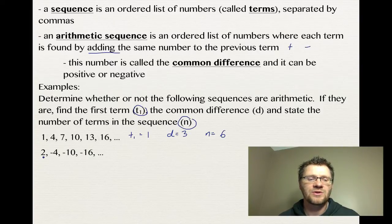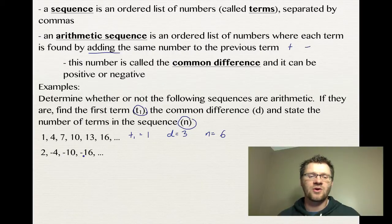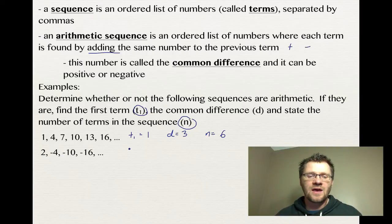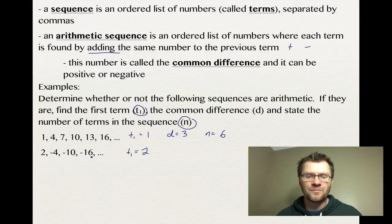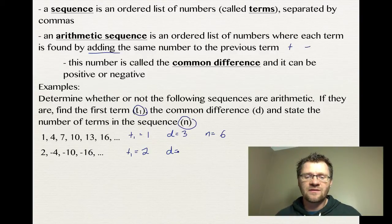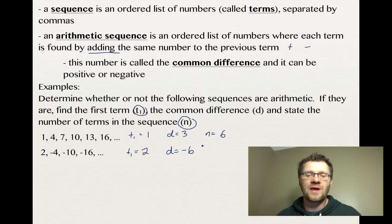For the next sequence: 2, -4, -10, -16 — we have a first term of 2, and each time we're subtracting 6, so the common difference is negative 6. In this case we only have four terms.